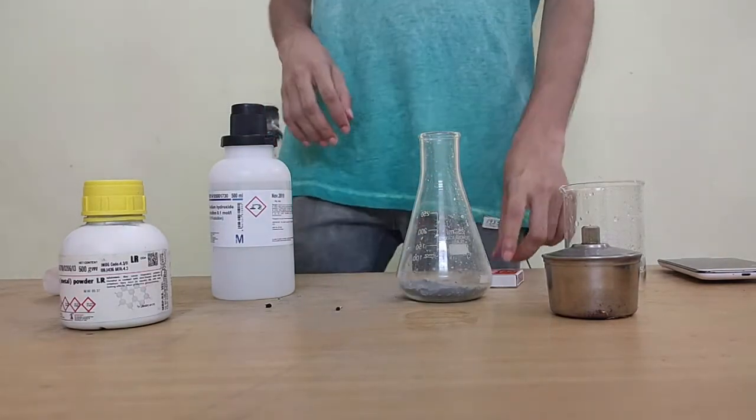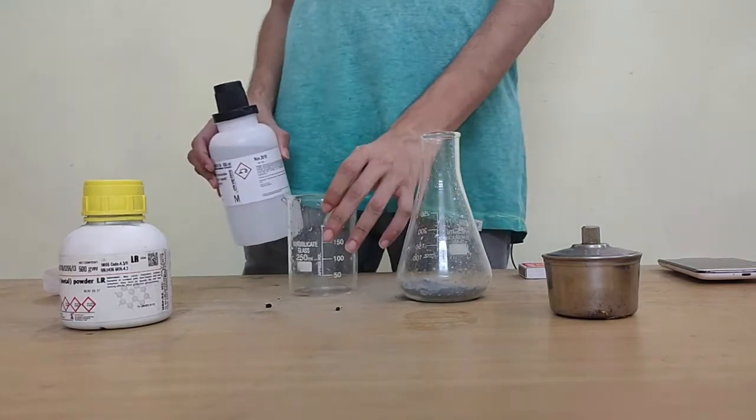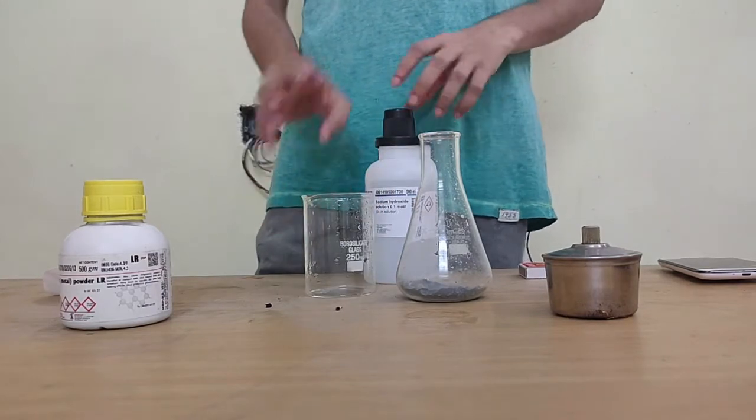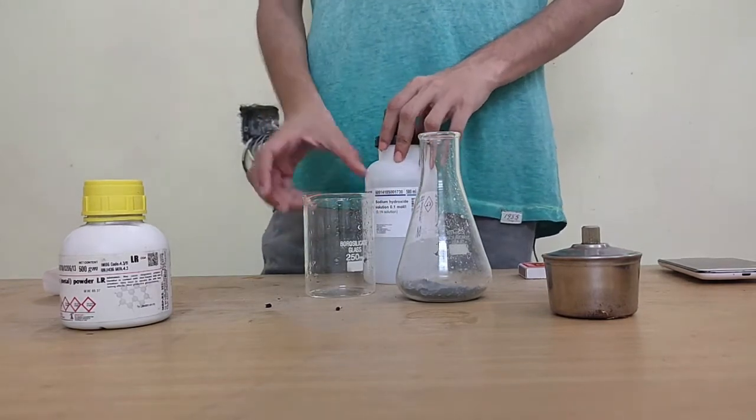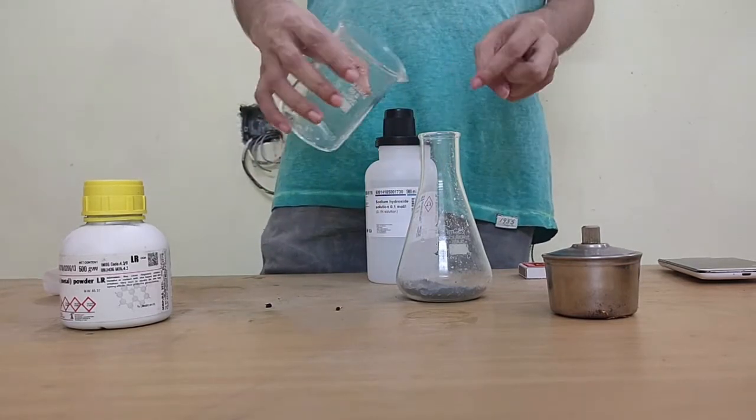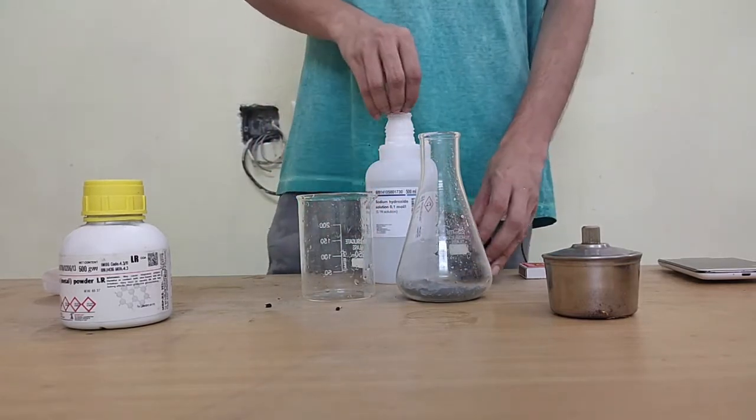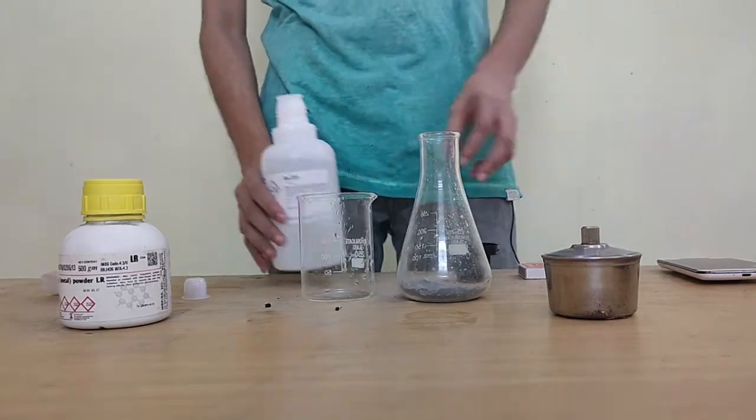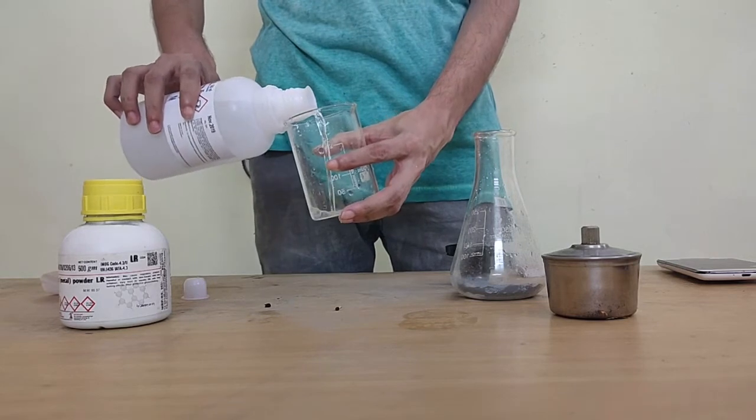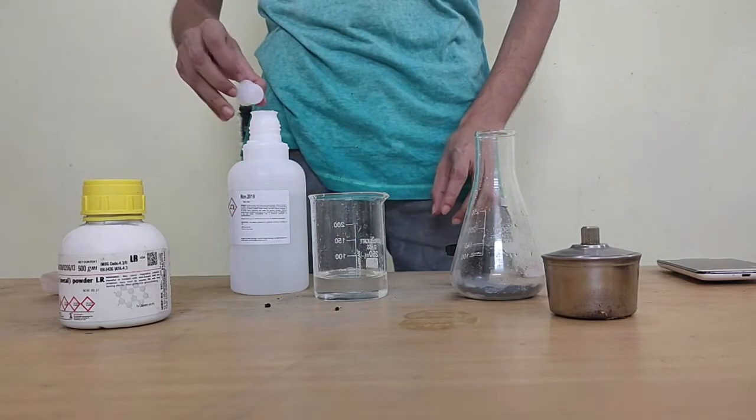The next thing I need to do is add my second reactant to this container and that is my base. Since the base is strong and I need to be extra careful, I'm gonna add it to the beaker first and then add it to this. The advantage of that is beakers have this kind of like a notch over here that helps me pour a liquid easily which a bottle does not have. First I'll pour my base in this beaker. There you go, that's a bit too much but that is fine.